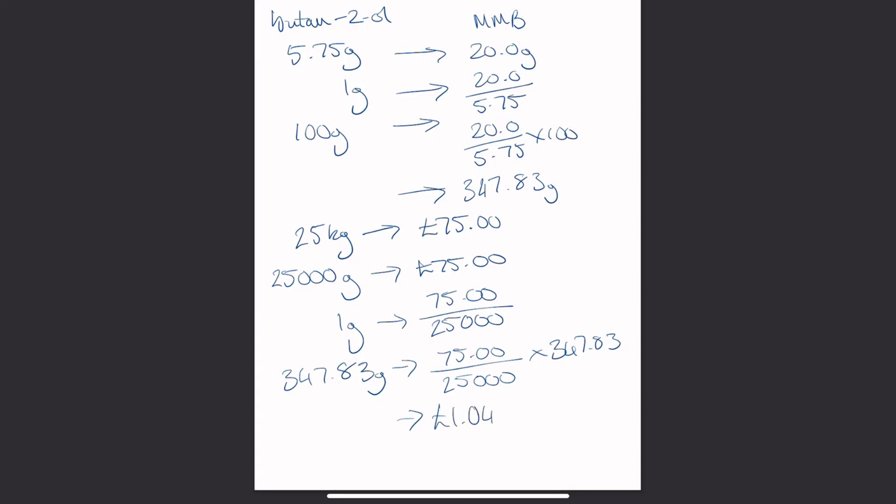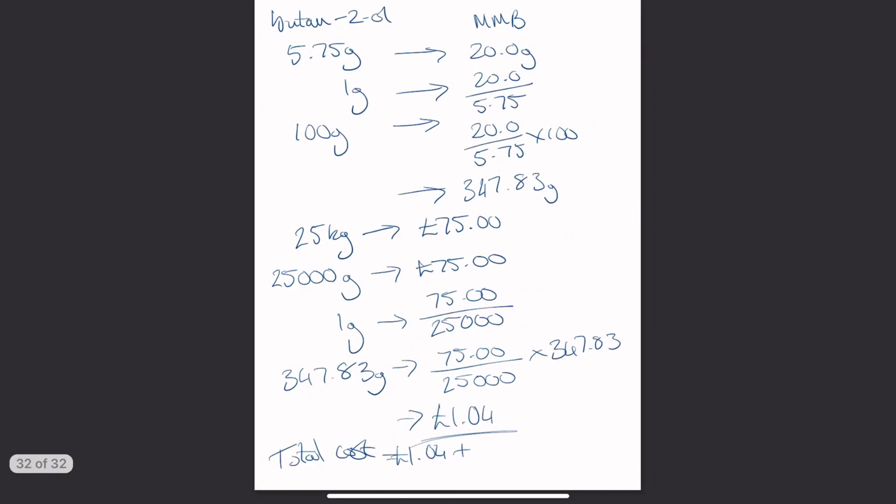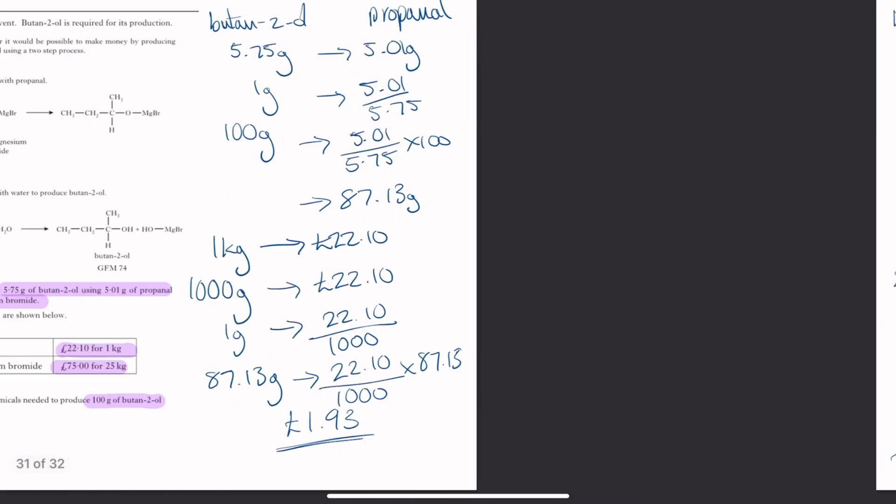So the total cost if we add it together equals 1 pound 4 pence plus 1 pound 93, so altogether that would be 1.04 plus 1.93, which is 2 pounds 97 pence.